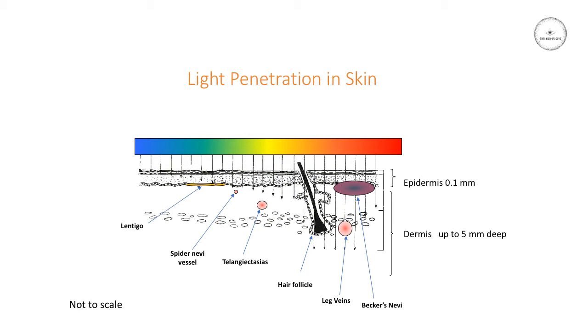Then you have the spidonevi blood vessels, which are in the upper part of the papillary dermis. Telangiectasias, which form thread veins, are a little bit deeper and a little bit bigger.